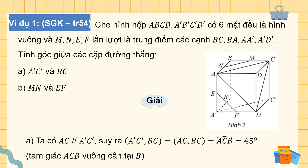Câu B: tính góc giữa MN và EF. Một lần nữa sử dụng phương pháp xác định góc giữa 2 đường thẳng. Ta giữ 1 đường cố định để vẽ 1 đường song song với đường còn lại. Hoặc từ 1 điểm bất kỳ bên ngoài vẽ cả 2 đường song song với MN và EF. Bài toán cần xác định đường MN và đường EF.